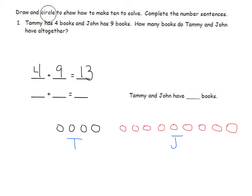Since the objective of this lesson is to make 10 when 1 addend is 9, I will make 10 by adding 1 of Tammy's books to John's. And I will put a circle around that to show how I've made 10.